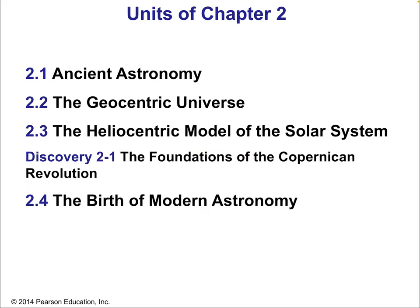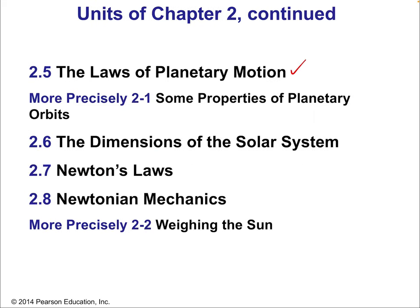The topics of chapter two are ancient astronomy; the geocentric universe, when the Earth was thought to be the center of the known universe; then the heliocentric model of the solar system — heliocentric means sun-centered, as opposed to geocentric, meaning Earth-centered. Then we'll talk about the foundations of the Copernican Revolution, the birth of modern astronomy, some key discoveries and laws, the laws of planetary motion also called Kepler's laws, and some properties of planetary orbits, specifically about ellipses.